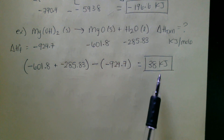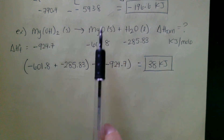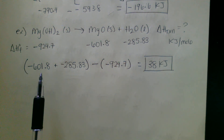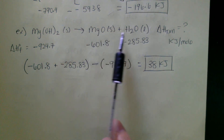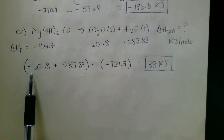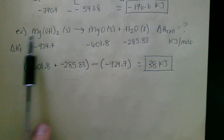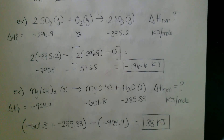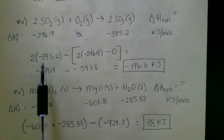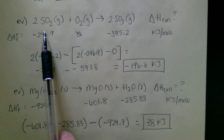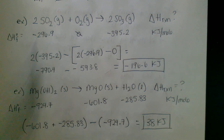This reaction was endothermic — it required a little bit of energy. The reactants are at a slightly lower energy state than the products, so we required energy to go from lower to higher. Notice when we have more than one reactant or product, we sum them together and then subtract the reactants — products minus reactants. If you have a coefficient, that coefficient multiplies the enthalpy value, as we saw with the SO2 and SO3 example. That's how enthalpy of formation works in calculating the enthalpy of a reaction.